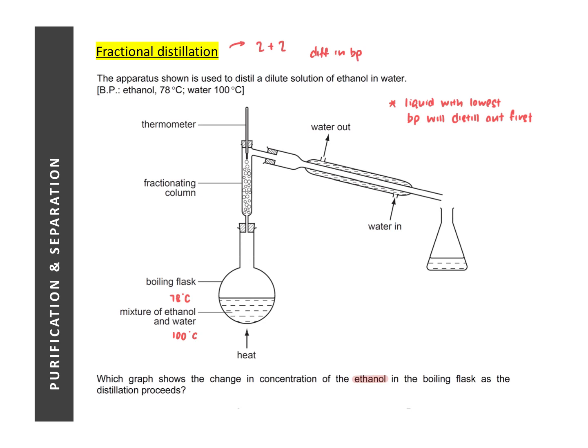Over here, the liquid liquid mixture is that of ethanol and water. The boiling point of ethanol is given to be 78. That of water is 100 degrees Celsius. So one key concept that you need to remember in distillation or fractional distillation is this, that the liquid with the lower boiling point will be distilled first because it will boil first and it will be collected first.